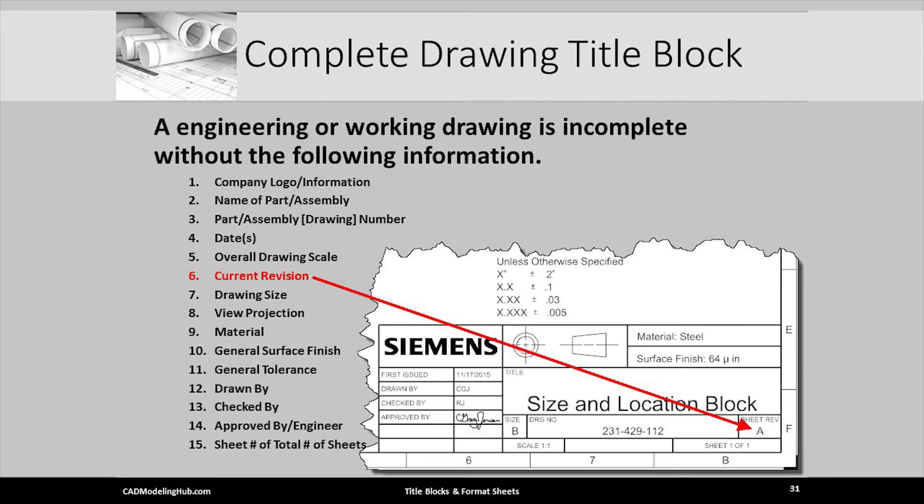Next is the sheet revision cell or block. By default it is set to A, meaning the original unchanged unmodified drawing. I will devote a future lecture to revisions and engineering change orders.